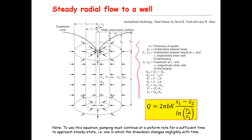All parameters are listed: the aquifer thickness b, the heads or drawdowns at observation wells located at distances r₁ and r₂, and so on. It is important to emphasize that to use this equation, pumping must continue at a uniform rate for a sufficient time to approach a steady state — one in which the drawdown changes negligibly with time.